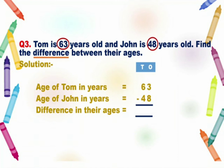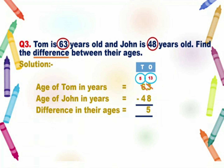As you can see, 3 is smaller than 8, so we will borrow 1 from 6. So 3 will become 13. Now 13 minus 8 is equal to 5. At the tens place, 6 became 5 after borrowing, so 5 minus 4 is equal to 1. So the answer here is 15. We will write 15 years.